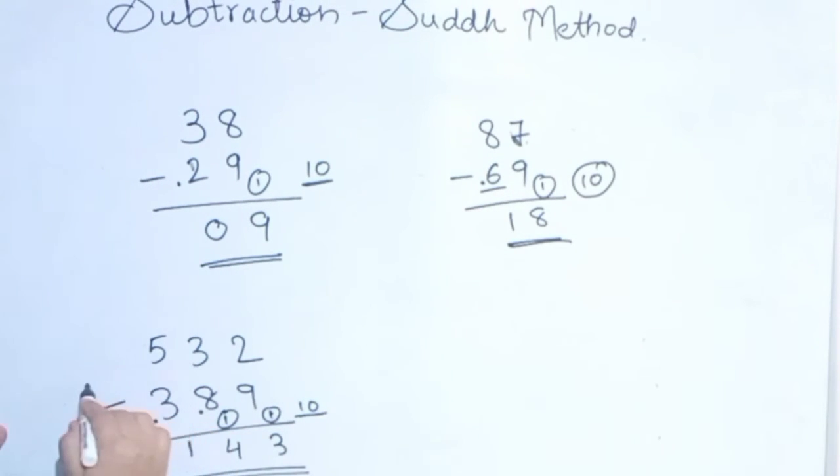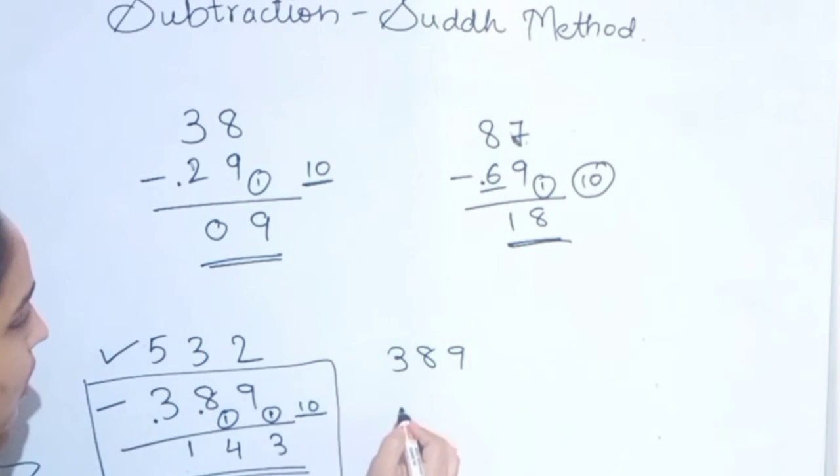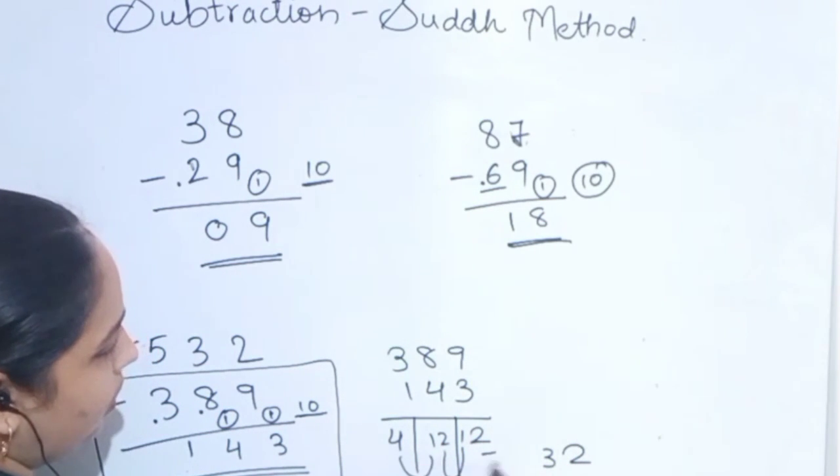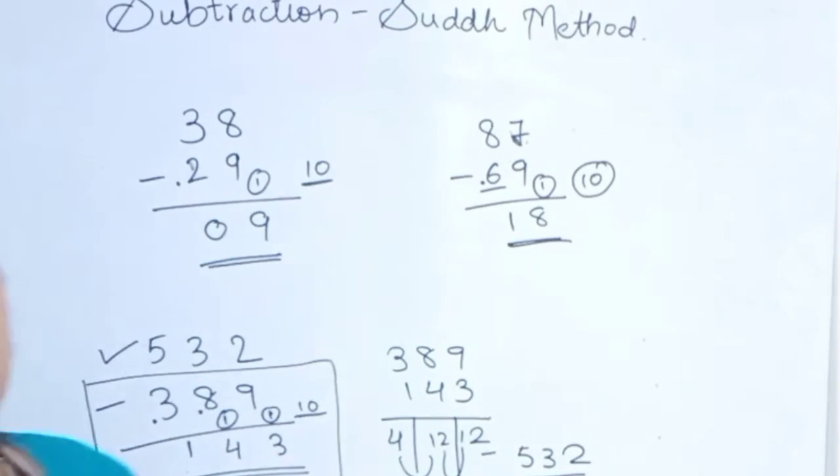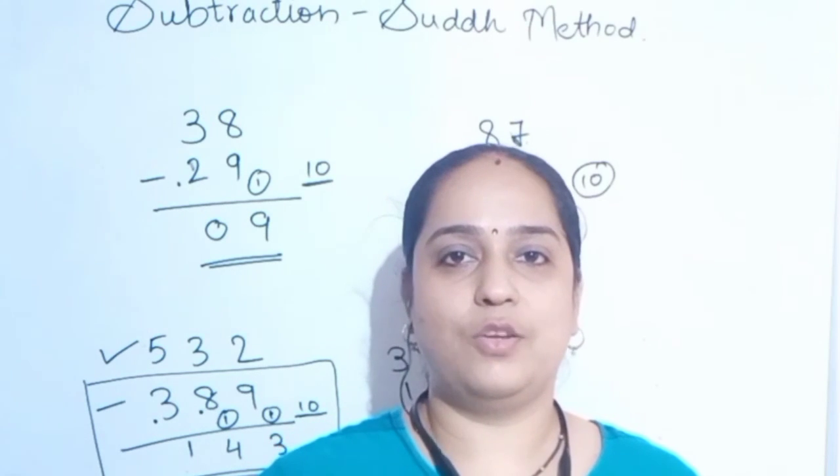How will we calculate? We will add these 2 numbers and we should get this number. So, 389 plus 143. 9 plus 3 is 12. 8 plus 4 is 12. Again, 3 plus 4, 3 plus 1 is 4. So, 2. See, we got the answer. This is how Suddh method works. I hope you understand the topic.